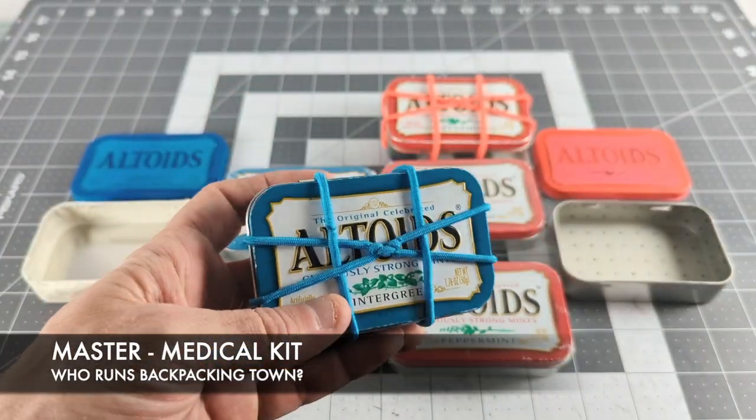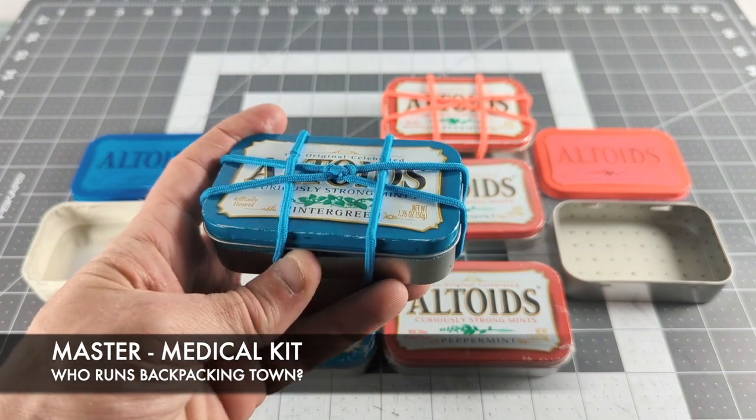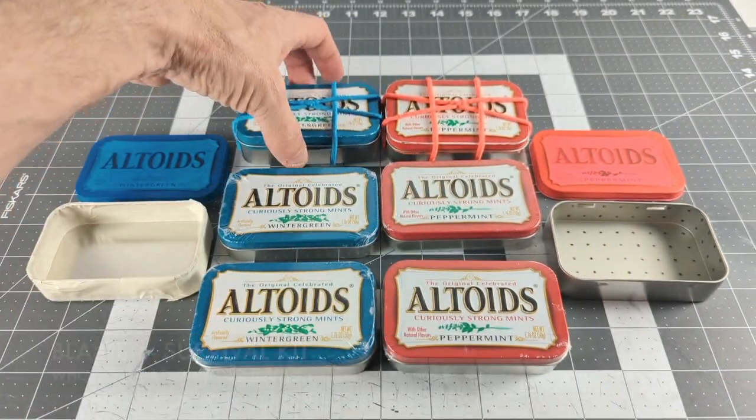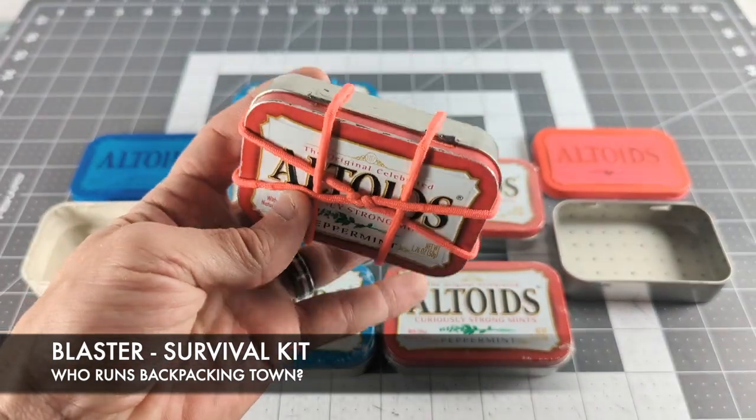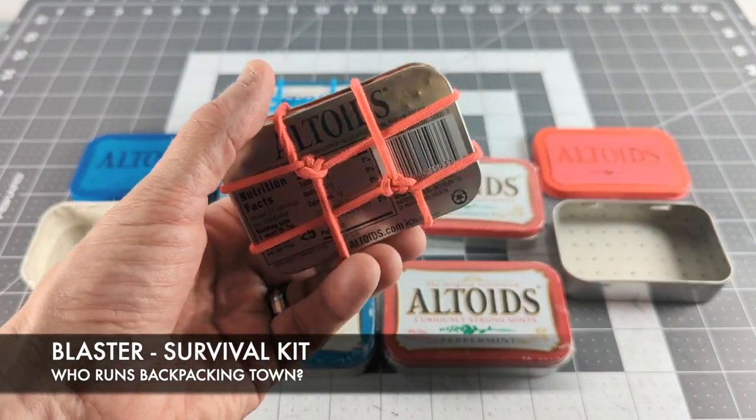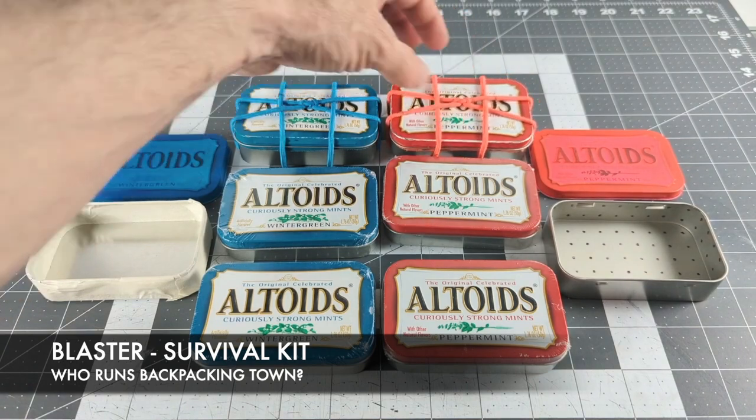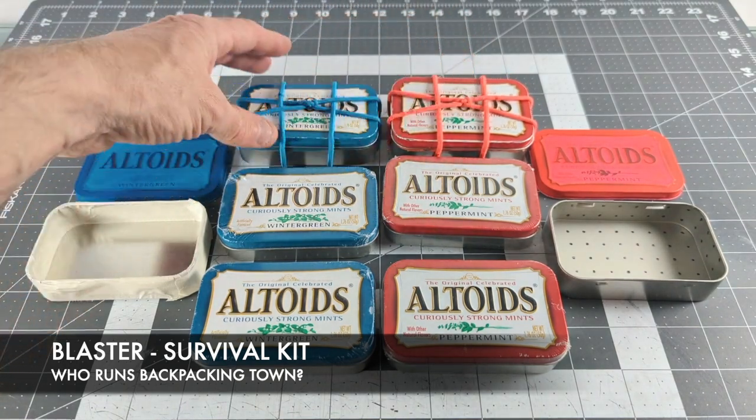And that works in Thunderdome. But you know what works in Backpacking? Master Medical Kit. Patch you up. Keep you good to go. Fire Survival Kit. Contact people. Do a lot of other fun things. Master Blaster run Backpacking Town.